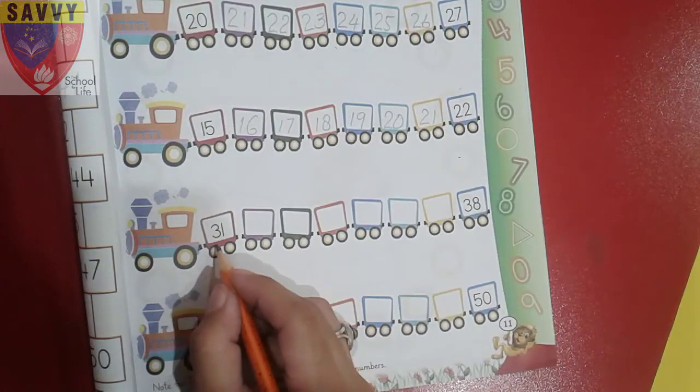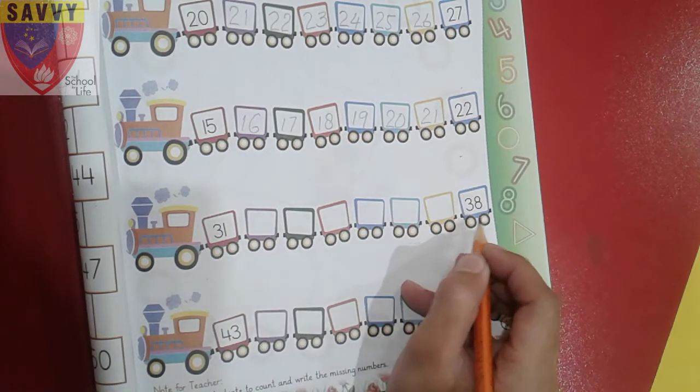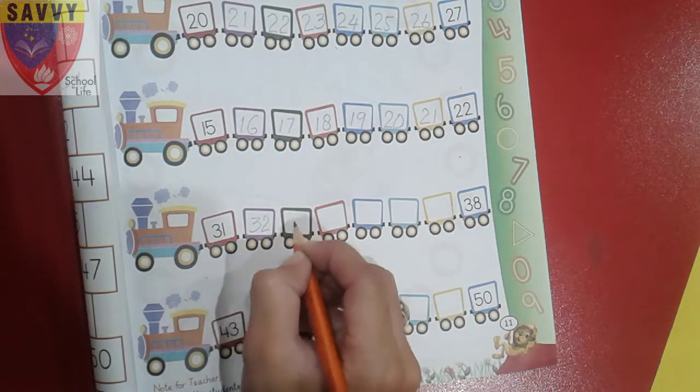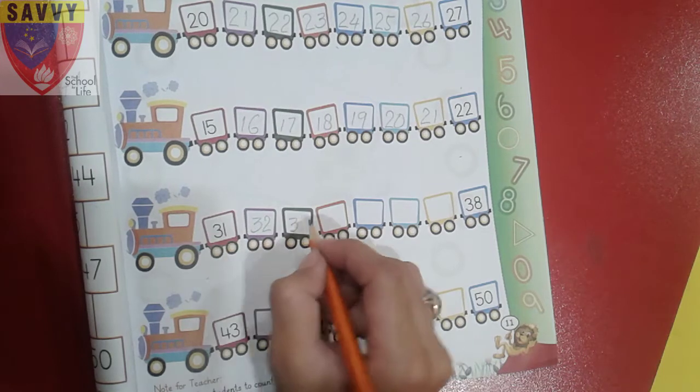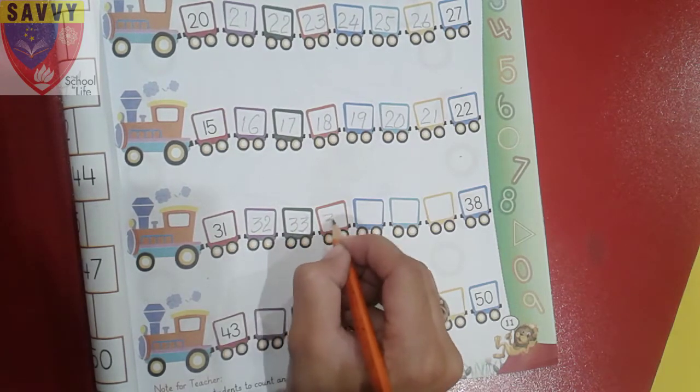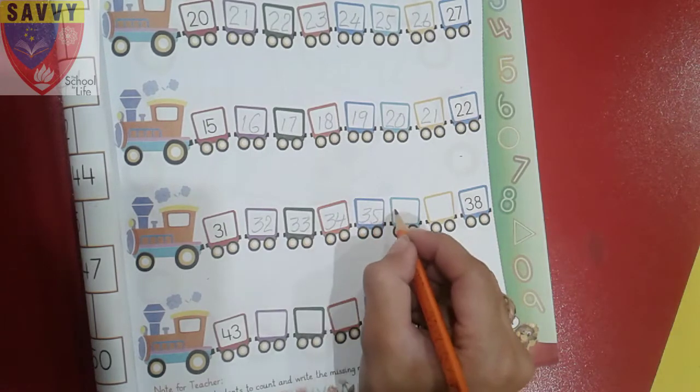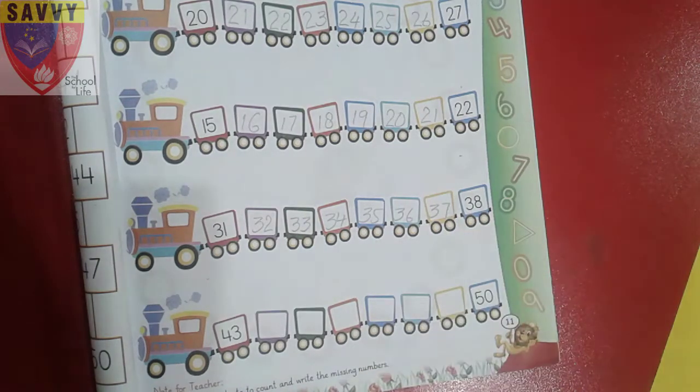And in this train we write the missing numbers from thirty-one to thirty-eight. So thirty-one, after thirty-two - thirty, thirty-one, two, three, thirty-three, thirty-four, thirty-five, thirty-six, thirty-seven, and thirty-eight.